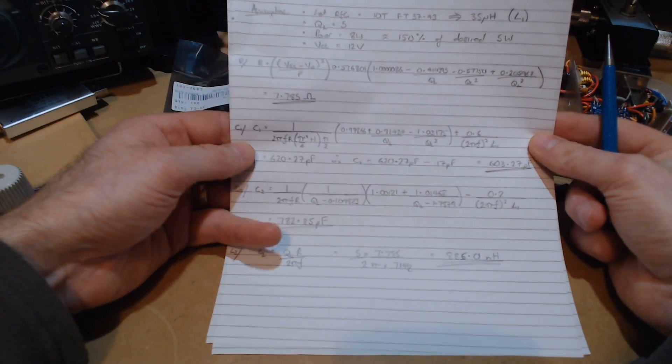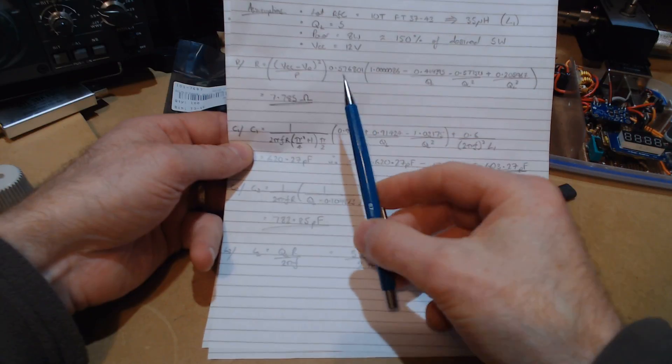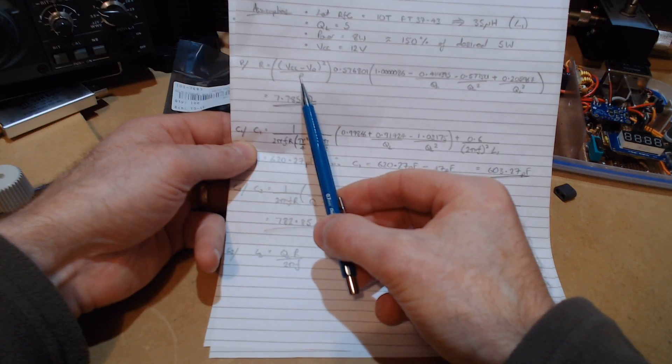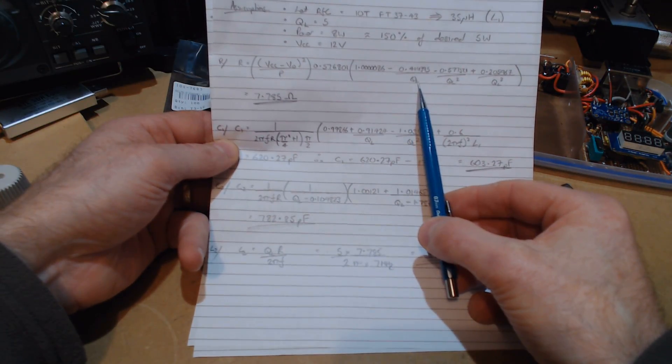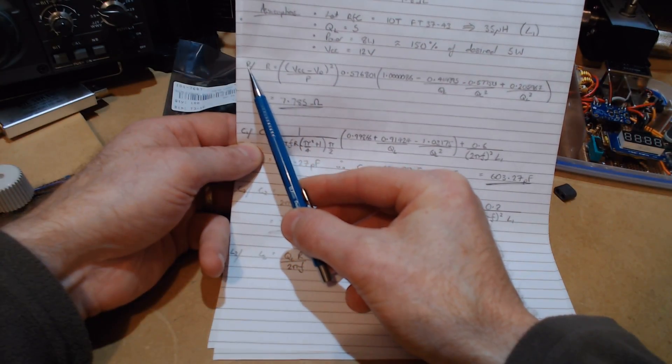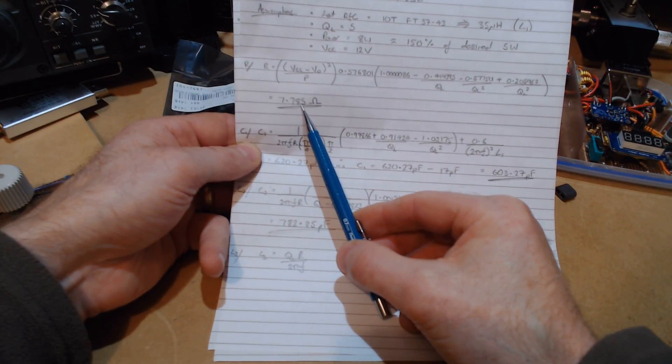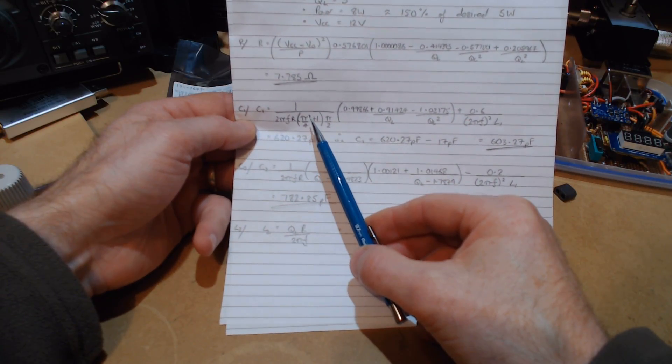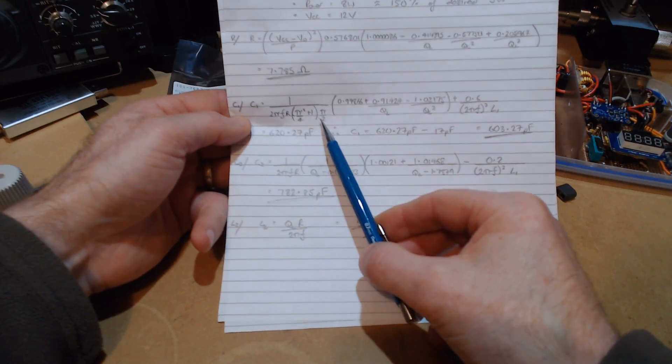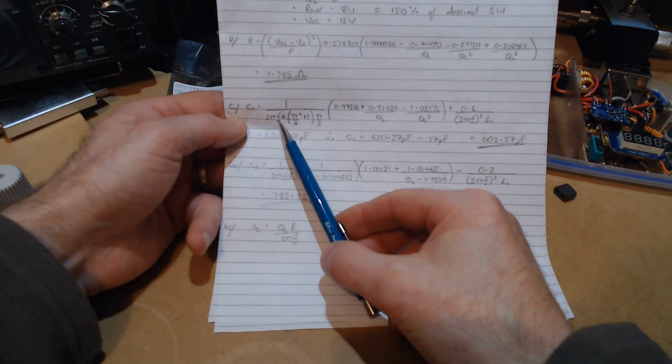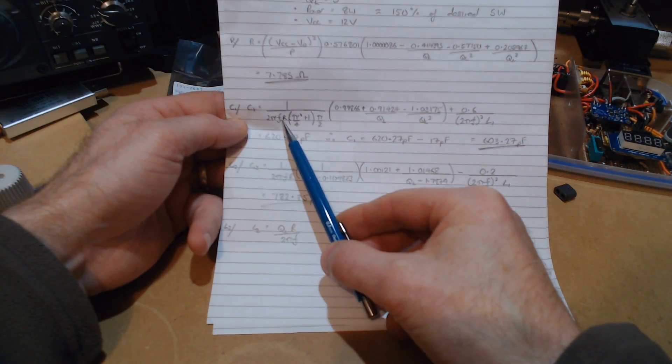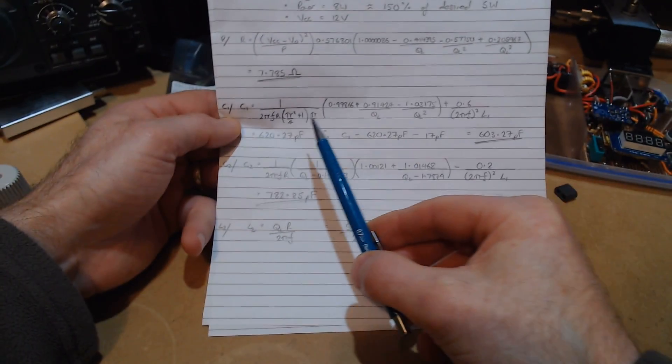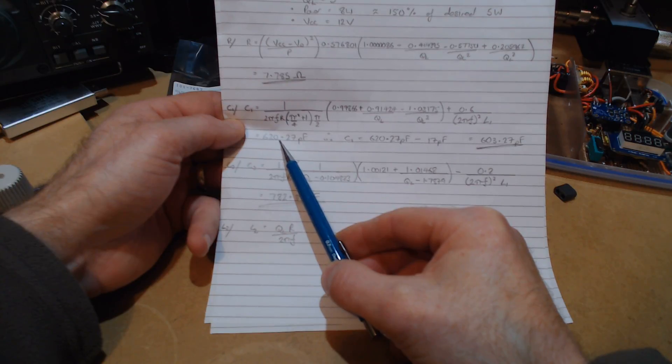Using those equations directly out of Nathan's paper, which I won't go through in depth here, but just plugging in the various values - our VCC, our V0, and our power, our loaded Q - we can come out in this particular case for our load resistor of 7.785 ohms. For C1, that's the capacitance in parallel with our device. We can plug in our various values there, frequency of operation, the R that we've now calculated gets used in the next lot of equations, and we can work that out and we get a value of 620 picofarads.